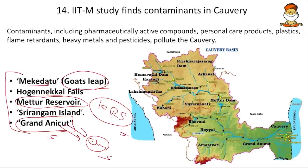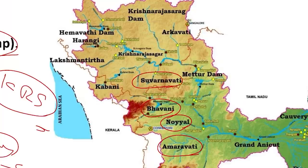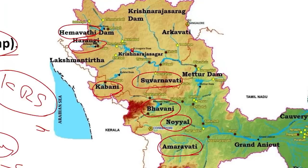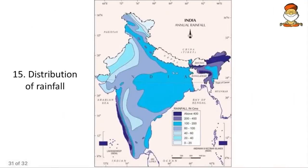Kaveri has several tributaries: Amaravati, Noyal, Bhavani, Suvarnavati, Kabini, Harangi, Hemavati (with Hemavati Dam), Krishna Raja Sagara Dam, Arkavati, and Mettur Dam. UPSC links subjects — for example, a question might ask which national parks are present in the Kaveri basin. Be careful about such map-linked questions connecting geography with other topics.